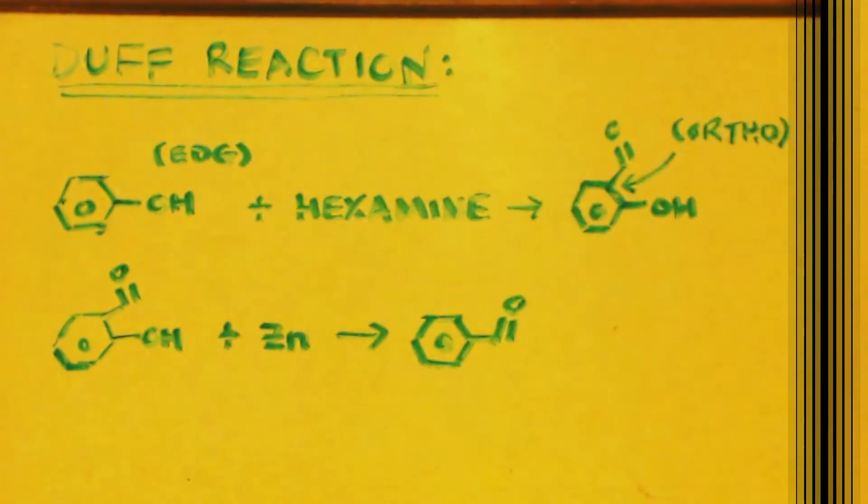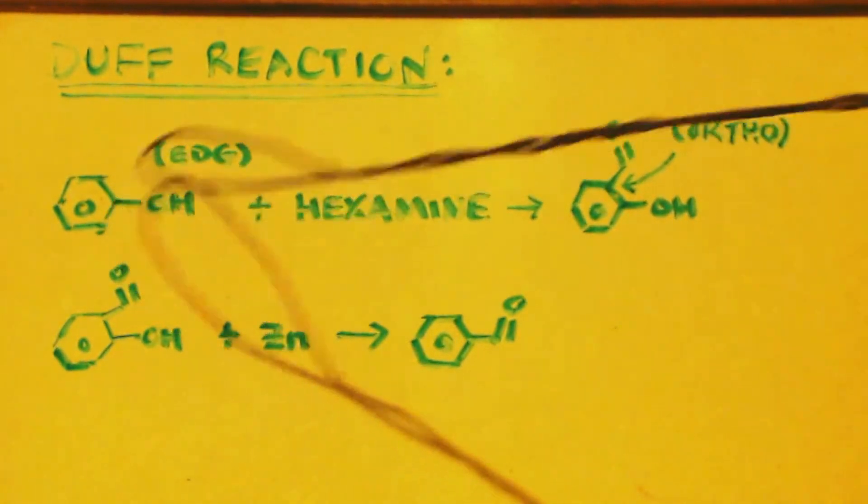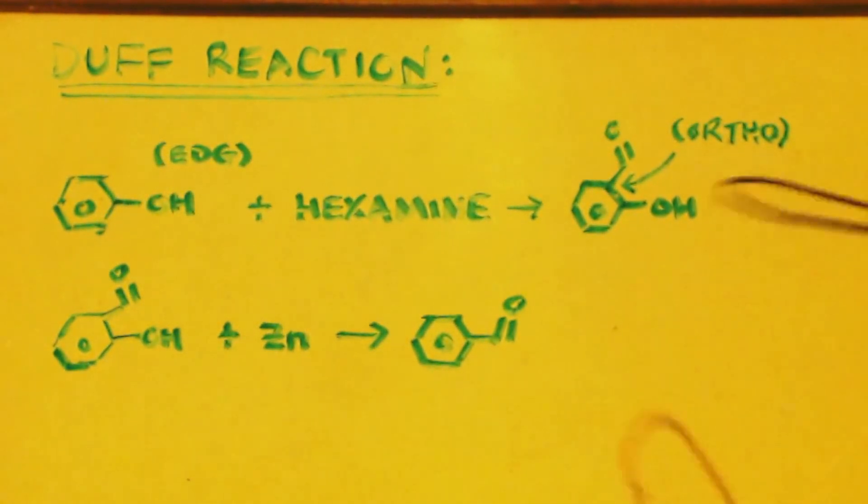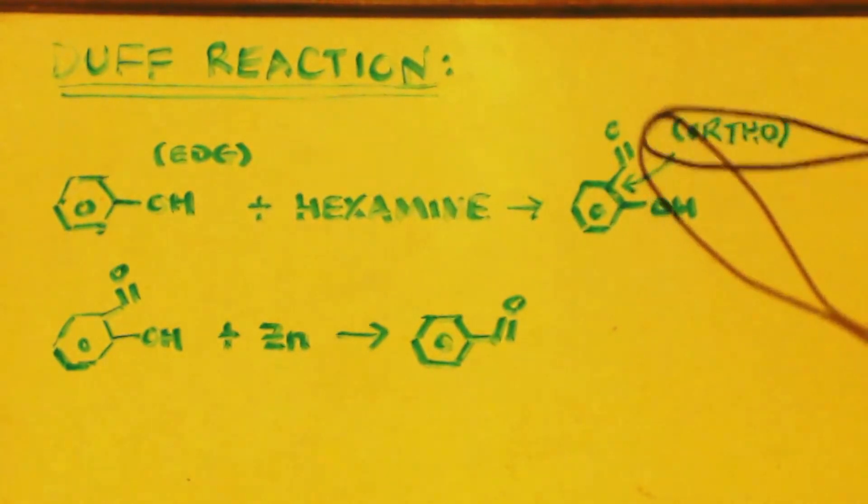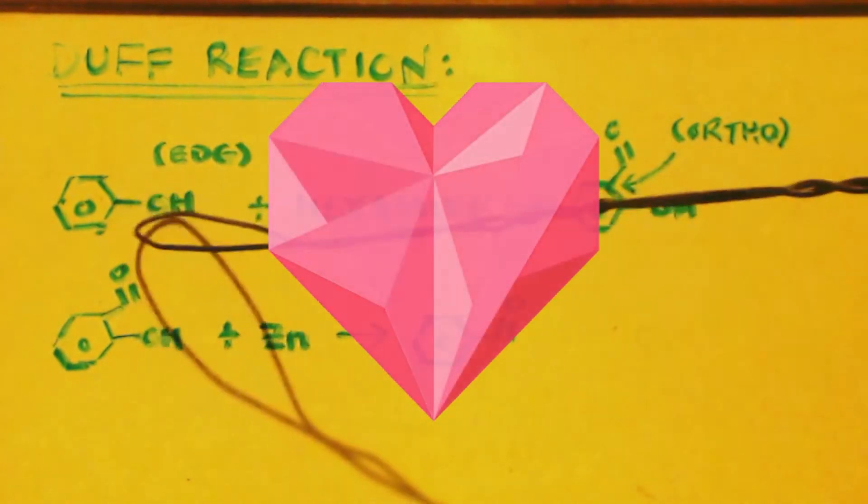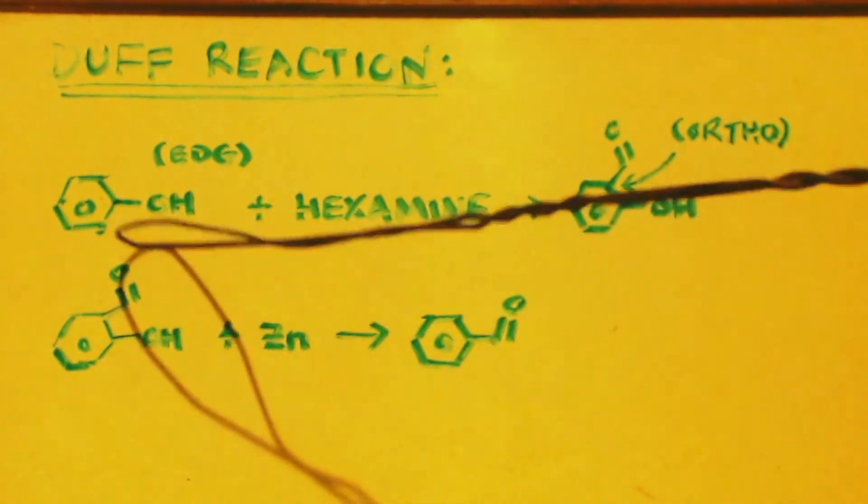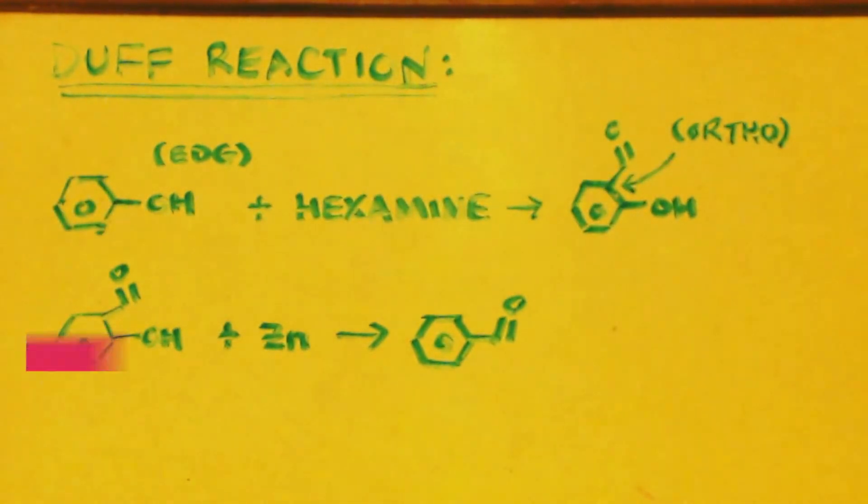Now this hexamine has other uses. I'm not going to go over every reaction this thing can do because there's a lot of them, but I'll go over three more. One is the Duff reaction. You basically take a benzene ring and you're adding on a formyl group so that you can make a benzaldehyde derivative.